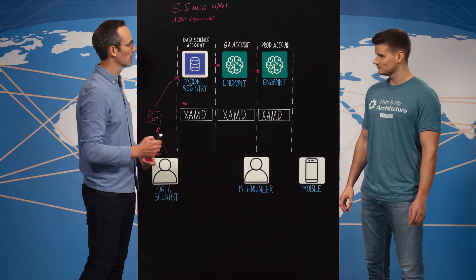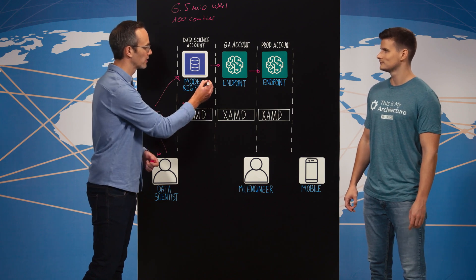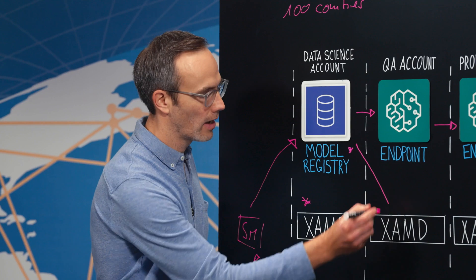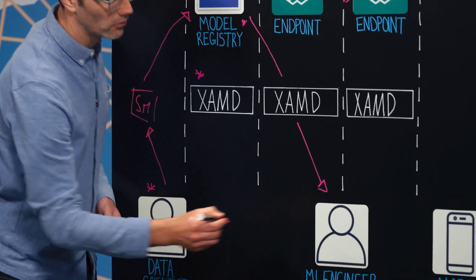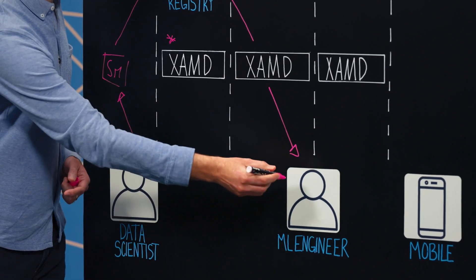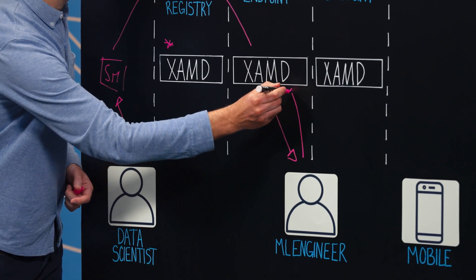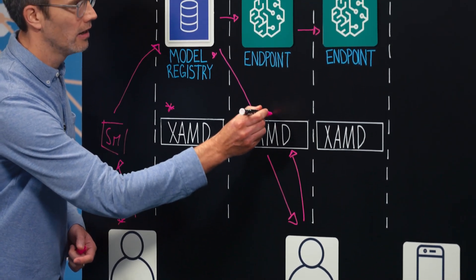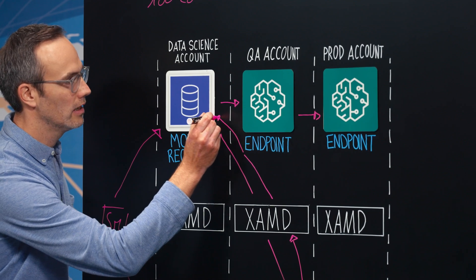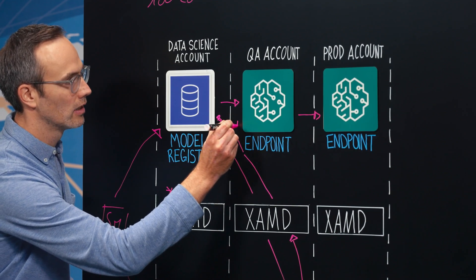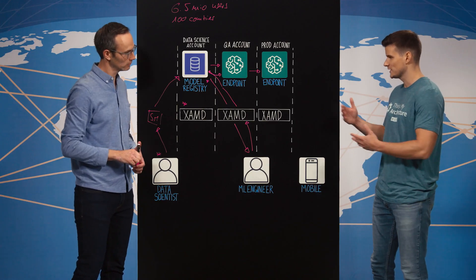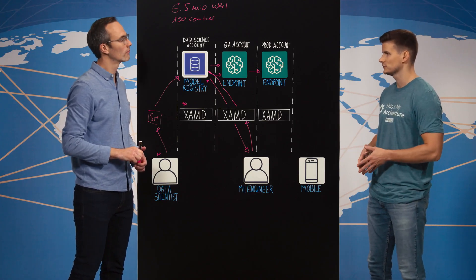Data scientists come and go to the model registry, they approve the models in the registry, which then notifies our ML engineers responsible for operationalization of all our production models. The ML engineer then invokes the deployment API of EXAMT, which fetches the model artifact and deploys it to the SageMaker endpoint in the QA account first. EXAMT basically takes care of all of that in the background.